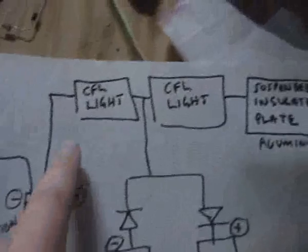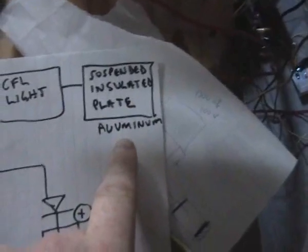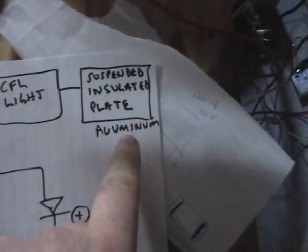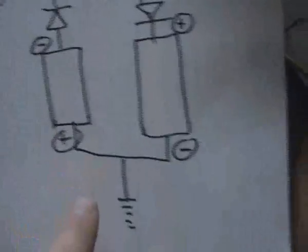So what I've done here is I've got my CFLs in series again, ending with a suspended insulated plate aluminum. So I've got two plates. I had those already made because of Boxer888's experiment, which I've replicated some time ago. And I've got it going back down to my charging circuit again.